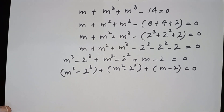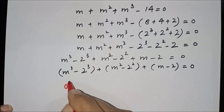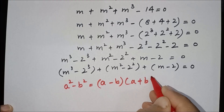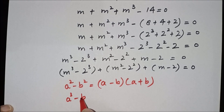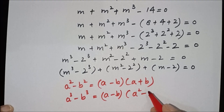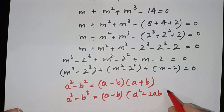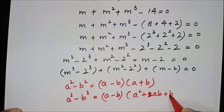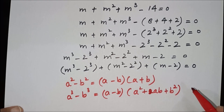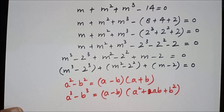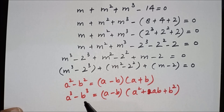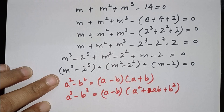I will use basic algebraic formulas. The first is a squared minus b squared equals (a minus b)(a plus b). The second is a cubed minus b cubed equals (a minus b)(a squared plus ab plus b squared). I am going to use these two formulas in the next step — a cubed minus b cubed for the cubic term and a squared minus b squared for the quadratic term.